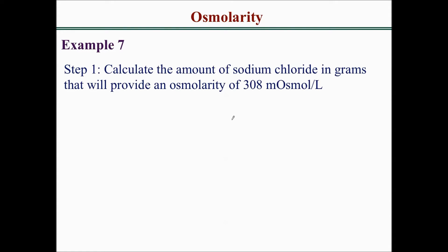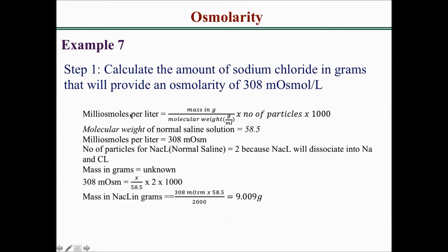Step 1 is to calculate the amount of sodium chloride in grams that will provide an osmolarity of 308 milliosmol per liter. We write out our formula: milliosmol per liter equals mass in grams divided by molecular weight in grams per mole, times number of particles, times 1000. Our molecular weight is 58.5, milliosmol per liter is 308, and the number of particles for sodium chloride is 2, since NaCl dissociates into sodium and chloride.